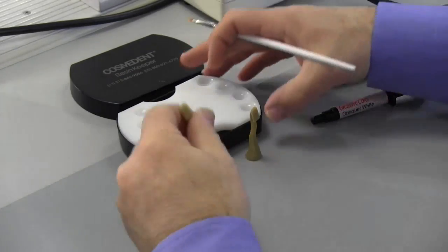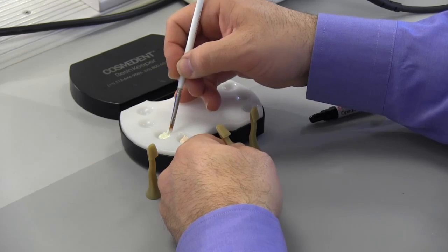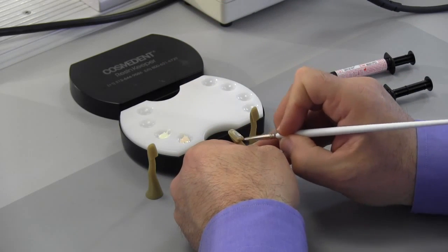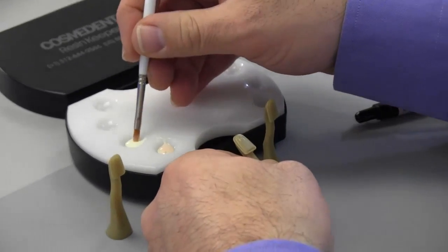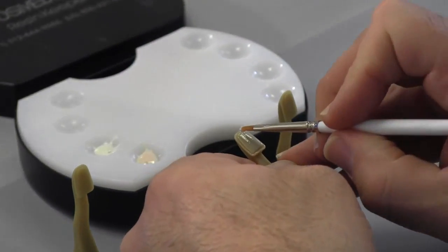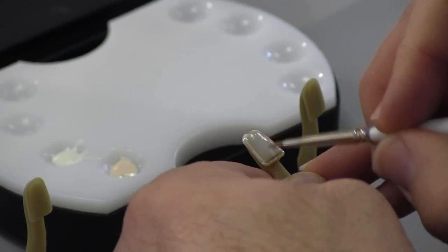After you etch and bond the tooth, you're going to take your white opaque, or what most doctors do is they take their white opaque and put a thin coat of opaquer to neutralize that gray, dark brown, or metal. If you notice, you can see the flatness or the brightness of this opaquer.